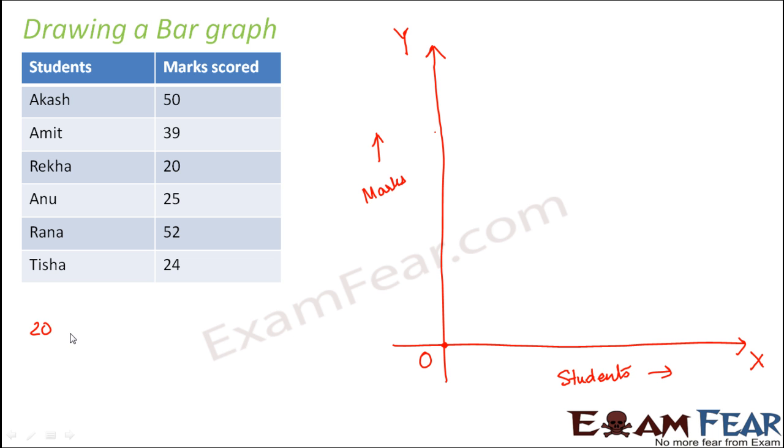Now is the most important part. We need to choose a suitable scale so we can represent all the numbers. The minimum number is 20 and the maximum is 50. You basically have numbers lying between 20 and 50 and you have to represent all these on the y axis. You will have to choose a suitable scale to cover all the numbers from 20 to 50 within a small length. Your graph paper is of limited height, so it has to be convenient.